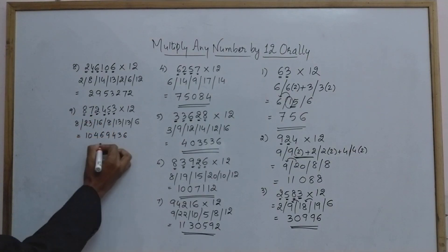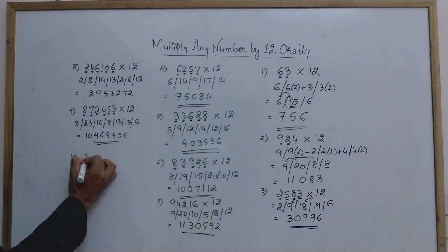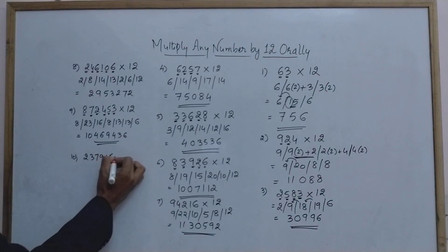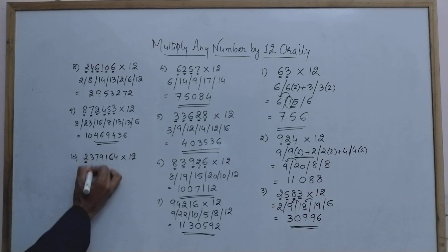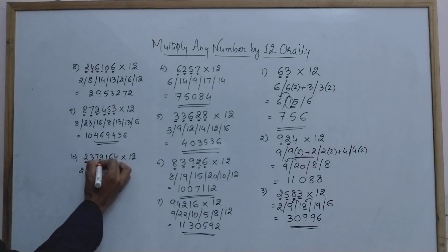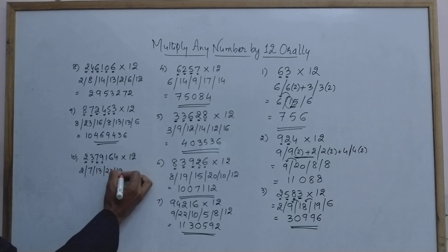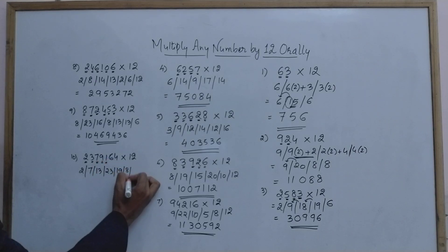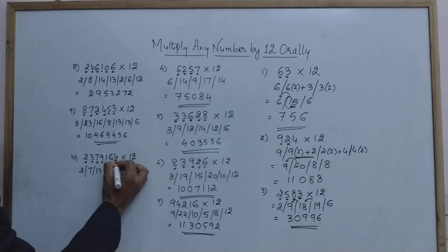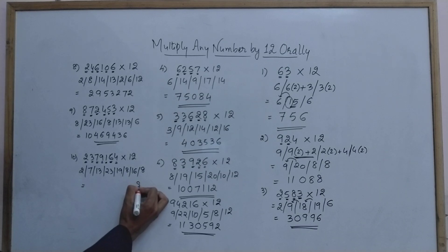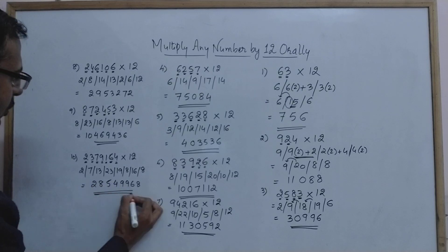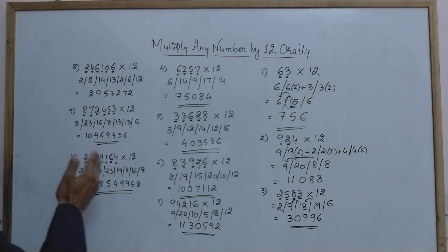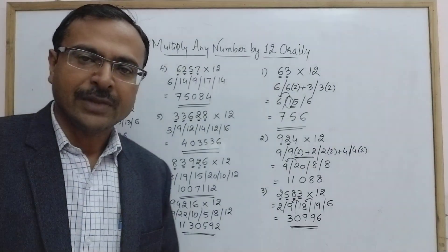Tenth example — a seven-digit number: 2379164 × 12. Double of 2 plus 3 = 7; double of 3 plus 7 = 13; double of 7 plus 9 = 23; double of 9 plus 1 = 19; double of 1 plus 6 = 8; double of 6 plus 4 = 16; double of 4 = 8. Writing the answer: 8, then 6 with 1 carry = 9; 19 = 9 with 1 carry; 24 = 4 with 2 carry; 15 = 5 with 1 carry; 8; and 2. So the answer is 28549968.